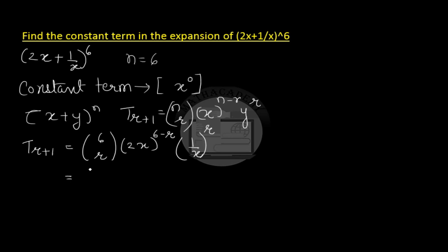This on simplification gives us 6 choose r, 2 to the power of 6 minus r, and x to the power of 6 minus r, into 1 to the power of r over x to the power of r. We have applied the laws of exponents which on further simplification gives us 6 choose r, 2 to the power of 6 minus r, x to the power of 6 minus r over x to the power of r. 1 raised to the power of r gives us 1.